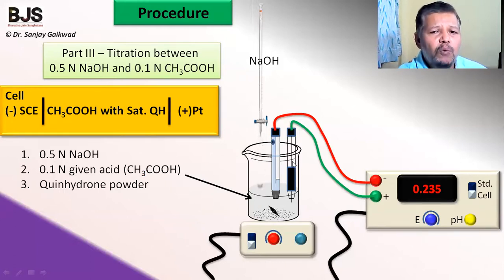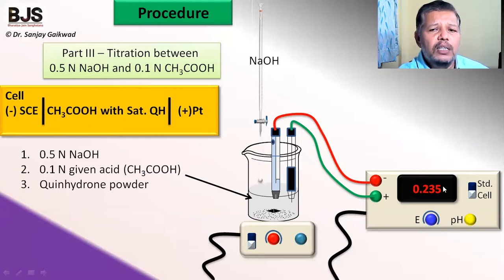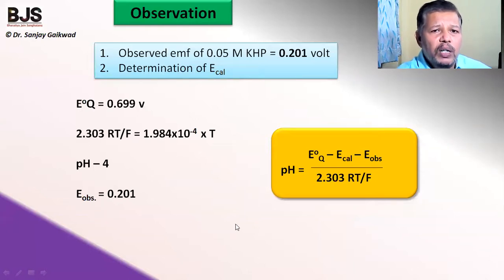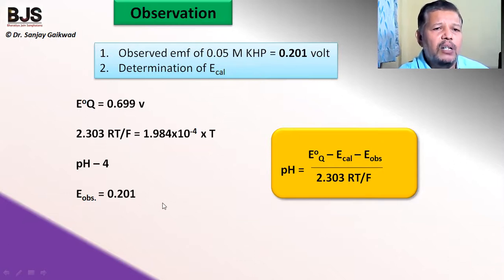With this setup, after each addition of 0.3 ml of NaOH from the burette, stir the solution and measure the potential difference (EMF) from the instrument. First, measure the EMF for the potassium hydrogen phthalate solution and substitute these values into the equation to find E_observed for the KHP solution. From that, calculate E_cal using all known values for the potassium hydrogen phthalate solution.